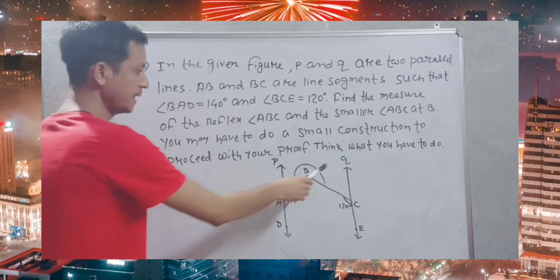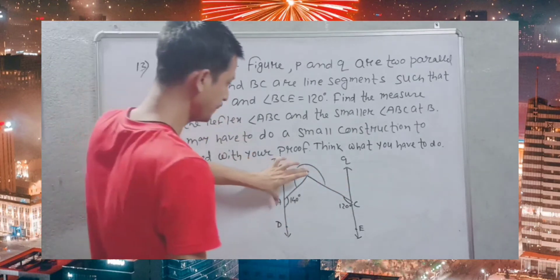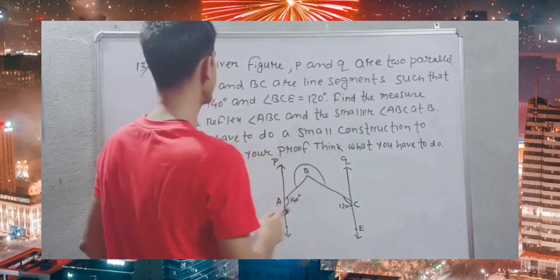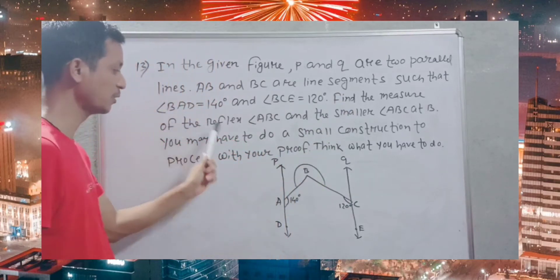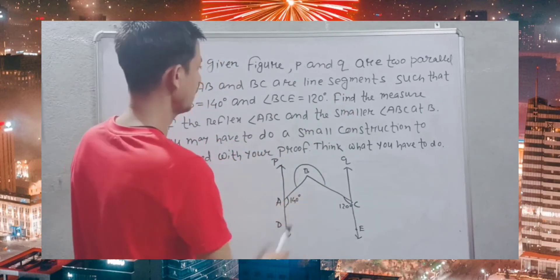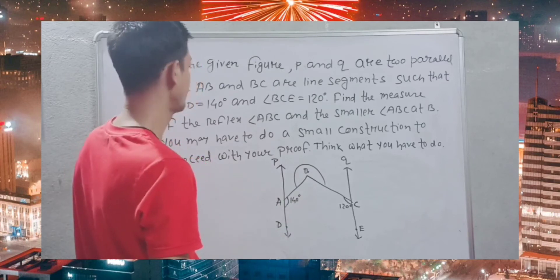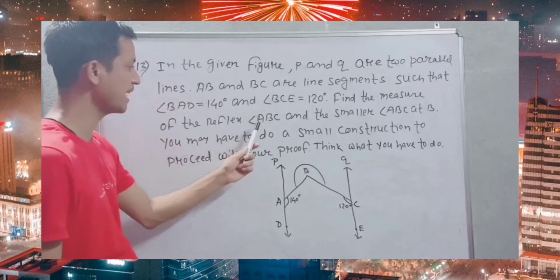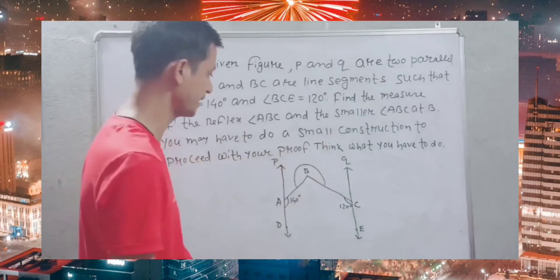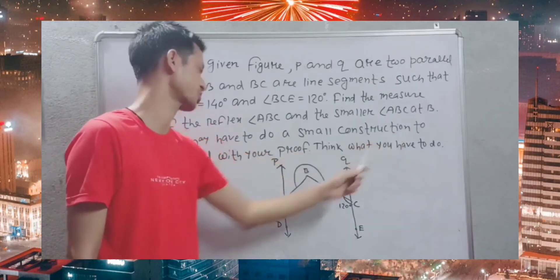P and Q are two parallel lines. A, B, C are line segments such that angle BAD is 140 degrees and angle BCE is 120 degrees. Find the measure of the reflex angle ABC and the smaller angle ABC. You may have to do a small construction.